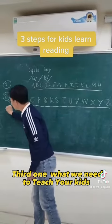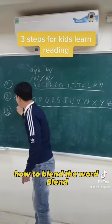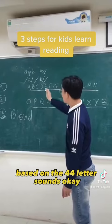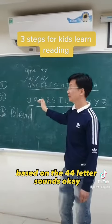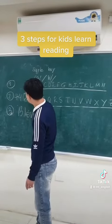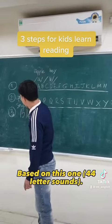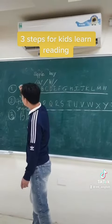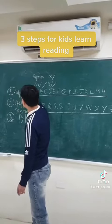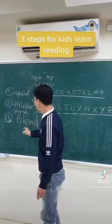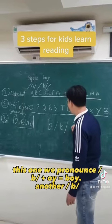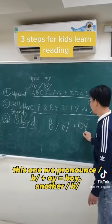The third step is to teach how to blend words. How to blend a word based on the 44 letter sounds. For example, let's use the word 'boy': you pronounce 'B' then 'oy' — boy.